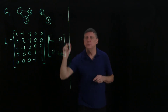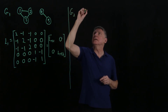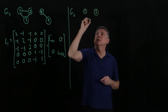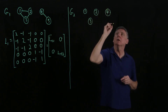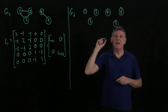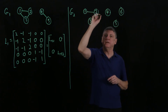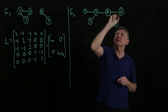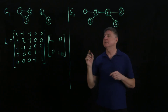Next, let's try graph 2. Graph 2 has 6 vertices: 1, 2, 3, 4, 5, and 6. The connectivity is: 1 connected to 2; 2 connected to 3 and 4; 4 connected to 5 and 6. This is a bipartite graph — we could have drawn it as a tree.